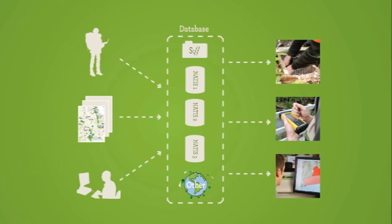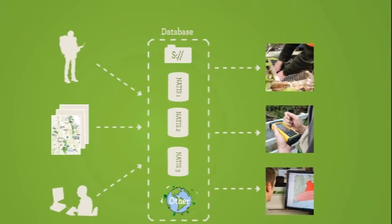Once data has been created, it is processed and then stored in the DOC database. From the database, this information can be accessed from anywhere that is linked into the network. By using a central GIS database and a standardised naming convention, the data is easier to locate and can be used by a wider audience.